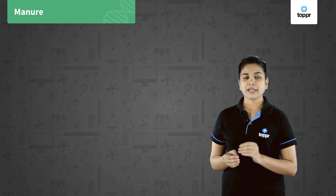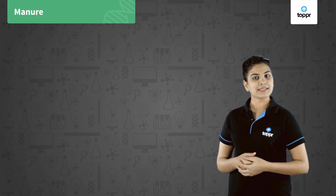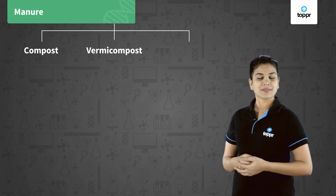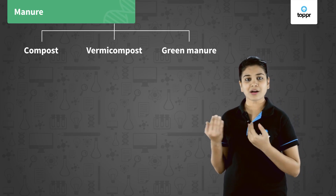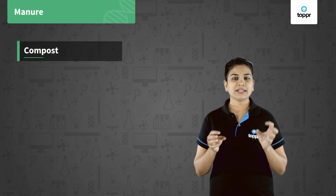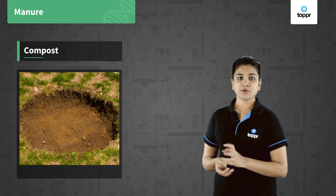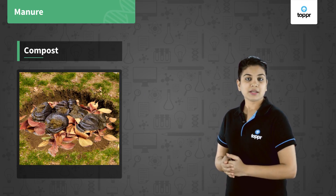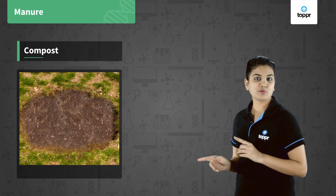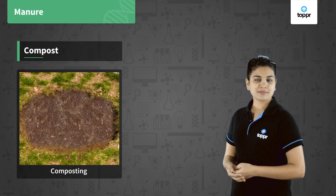Based on the kind of organic material used, manure can be of various types: compost, vermicompost, and green manure. Compost is a mixture of decomposed organic matter. It is prepared by putting plant and animal waste in a pit and covering it for a number of days. The process of preparation of compost is known as composting.